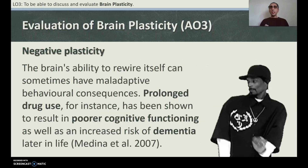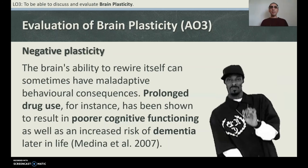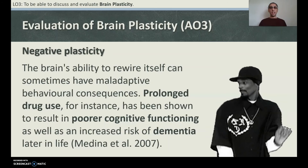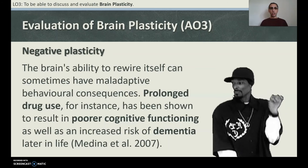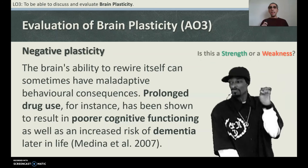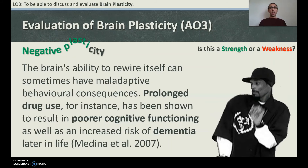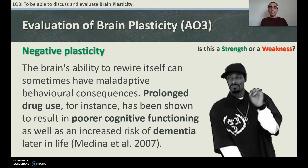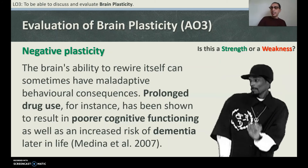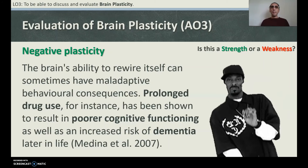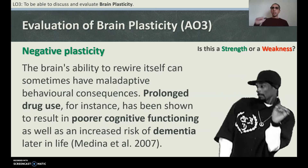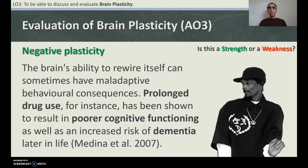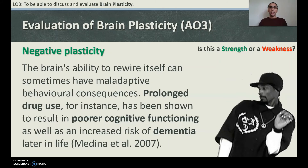Negative plasticity: the brain's ability to rewire itself can sometimes have maladaptive behavioural consequences. Prolonged drug use, for instance, has been shown to result in poorer cognitive functioning as well as an increased risk of dementia later in life. This is still considered a strength — it's a good thing that we understand that drug use can cause poor cognitive functioning and increase the chance of dementia, as well as schizophrenia. This knowledge is valuable even if the finding itself is negative.